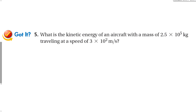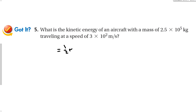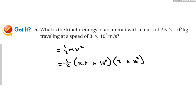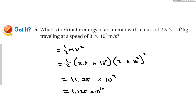For the gotta problem, using the same formula: one-half times 2.5 times 10 to the 5th times (3 times 10 squared) squared. So 1.5 times 2.5 times 3 squared (which is 9) gives 11.25, times 10 to the 4th times 10 squared squared. Adding exponents: 4 plus 5 gives 9. Since 11.25 is not in proper scientific notation, the answer is 1.125 times 10 to the 10th power.